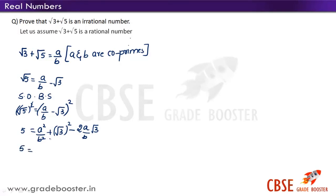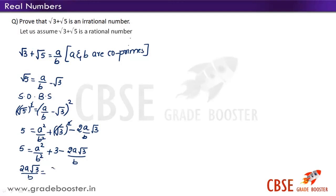So we get: 5 equals a square by b square plus 3 minus 2a root 3 by b. Now we bring the negative term to the other side and 5 to this side. So: 2a root 3 by b equals a square by b square plus 3 minus 5.